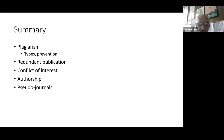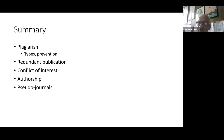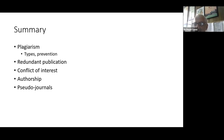In summary: I've talked about plagiarism — some types and prevention, though the next speaker will cover this in detail. I've talked about fabrication and falsification, redundant publications — both duplicate and salami — a definition for conflict of interest and the common types: financial, personal, and academic. I've talked about authorship, and finally given a word or two about pseudo journals. Thank you very much. If you have any questions, I'm happy to take them.